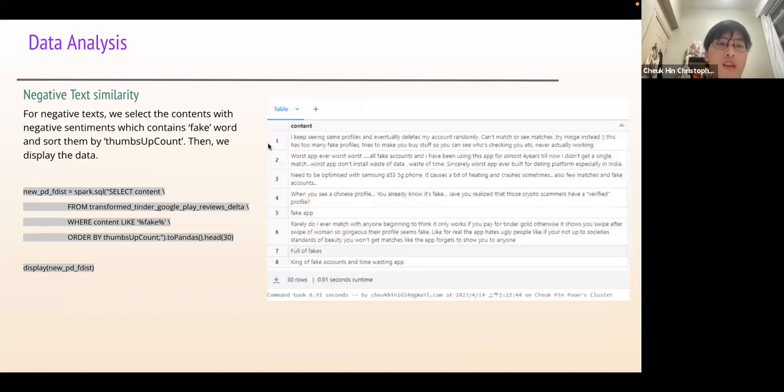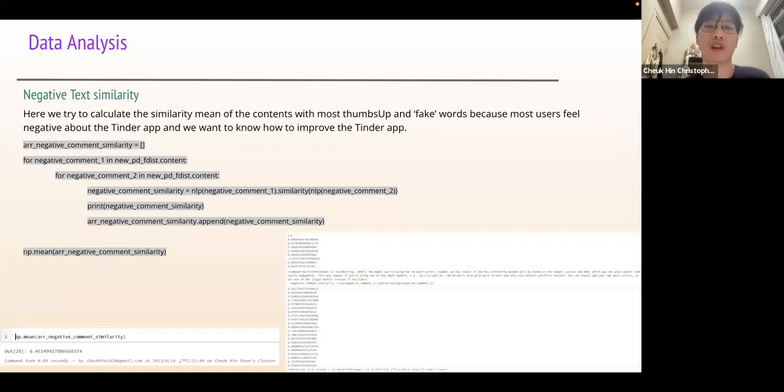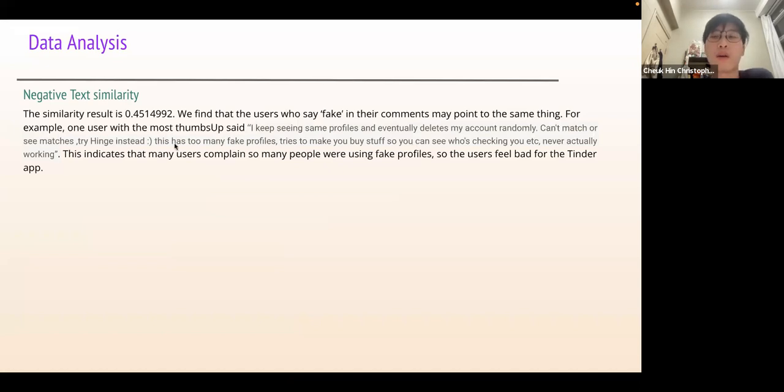For negative texts, we see the content with negative sentiment which contains the fake word and sort them by thumbs up count. Then we display the data. We calculate the similarity mean of the content with most thumbs up and fake word. Because most users feel negative about the Tinder app, we want to know how to improve it. The similarity result is about 0.7 to 0.45. We find that users who say fake in the comment actually may point to the same thing. For example, one user with the most thumbs up says, I keep seeing fake profiles and eventually didn't mind, I can't randomly. And this has too many fake profiles. This may indicate that so many users complain about many people using fake profiles. So the users feel bad about the Tinder app. When they say fake in the comment, they actually point to the same thing: so many people using fake profiles.